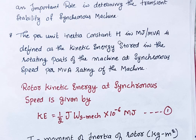The per unit inertia constant H, in Mega Joules per MVA, is defined as the kinetic energy stored in rotating parts of the machine at synchronous speed per MVA rating of the machine. Here we are using the mechanical synchronous speed.